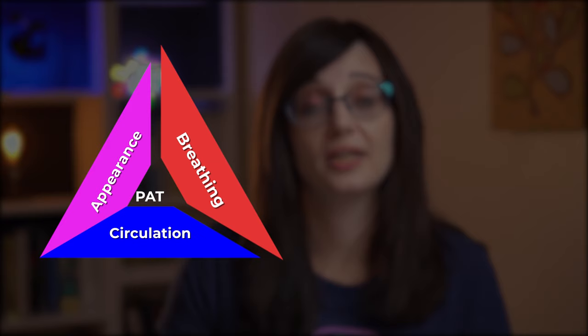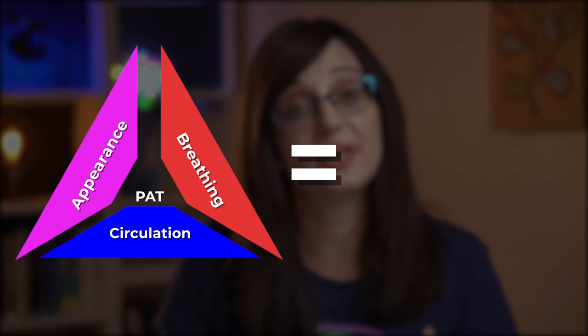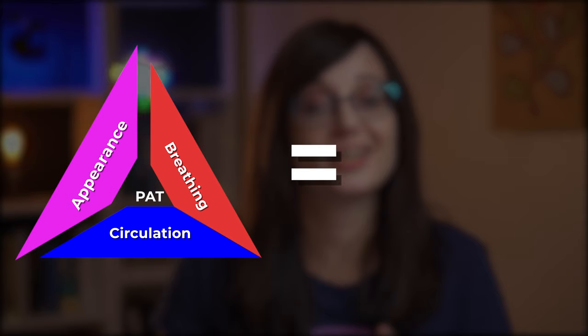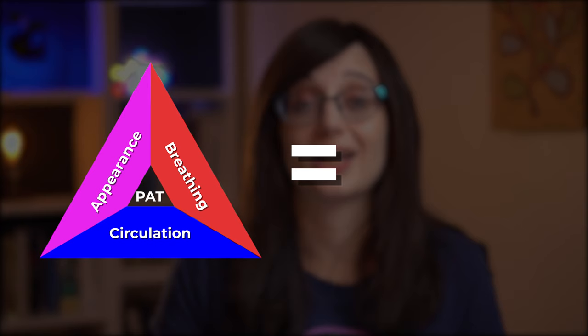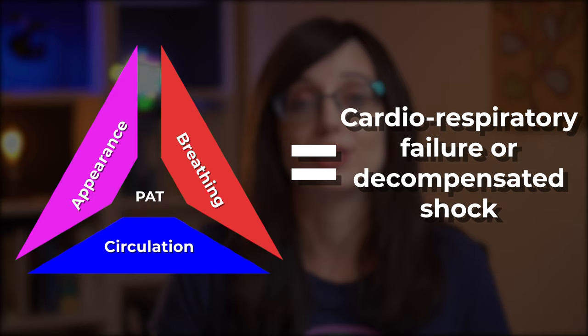A child with breathing signs only is considered to be in respiratory distress. A child with breathing signs and appearance signs is considered to be in respiratory failure. A child with appearance signs and circulation signs is considered to be in shock. A child with appearance signs only would be considered to have a neurological or metabolic problem. A child with signs in all three areas would be considered to have cardiorespiratory failure or decompensated shock.